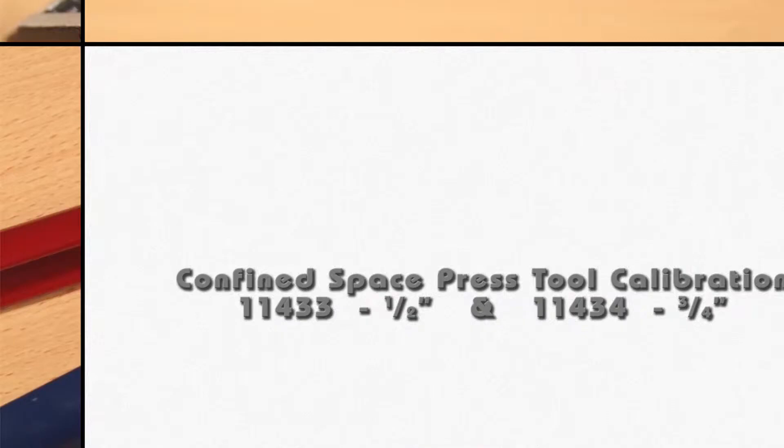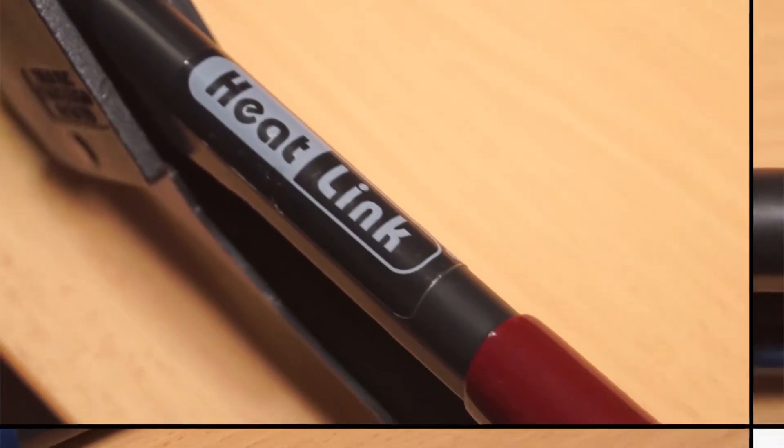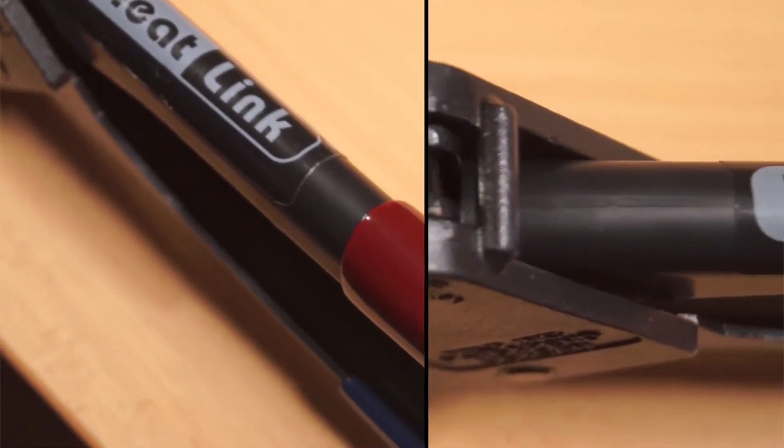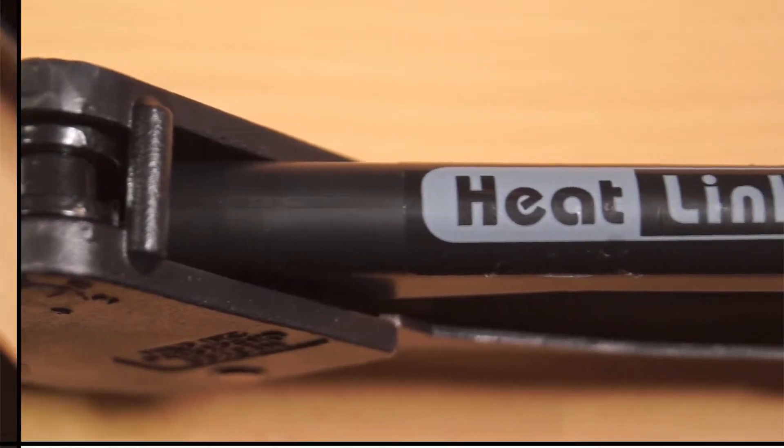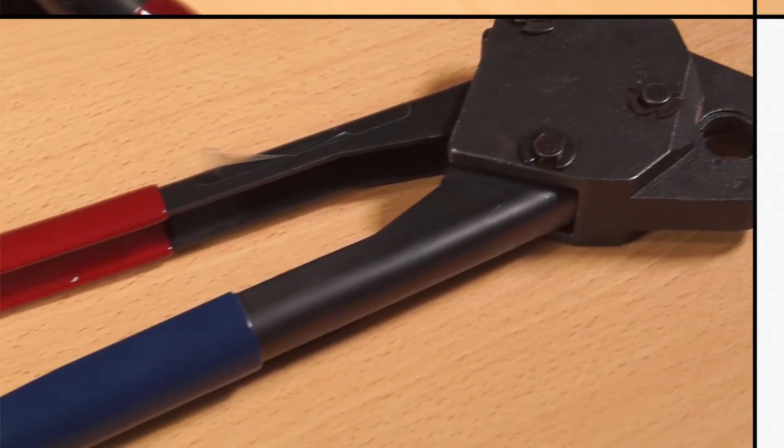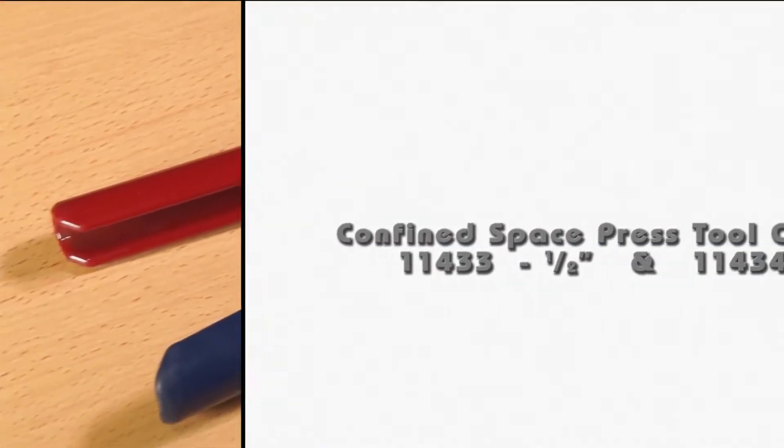Heat-Link press tools are used to create a watertight seal between Heat-Link PEX tubing and fittings using our stainless steel sleeves. For proper and consistent presses, each tool must be calibrated as necessary using the following procedure.